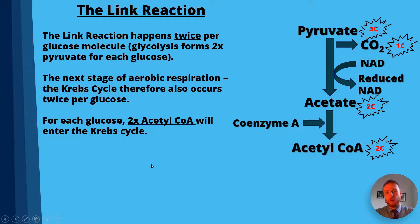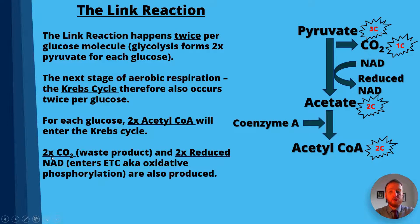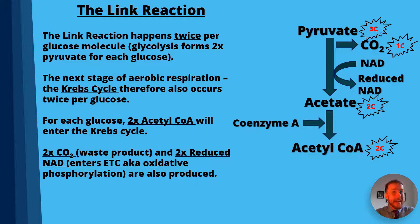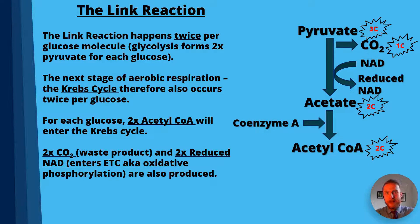So what are the final products? For each glucose, we get two molecules of carbon dioxide and two molecules of reduced NAD. The carbon dioxide is a waste product that we breathe out, and the reduced NAD enters the electron transport chain, where it is used in oxidative phosphorylation to produce massive amounts of ATP. Check out my video on that for more information.